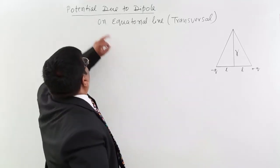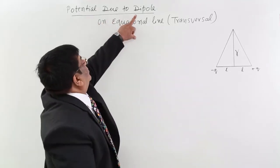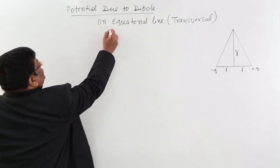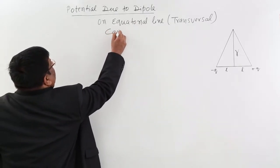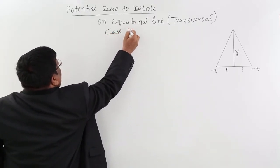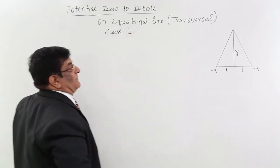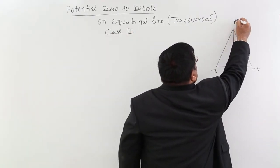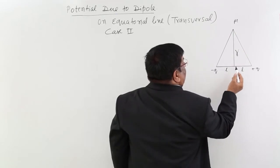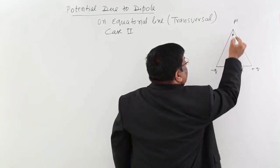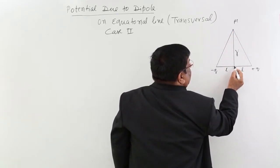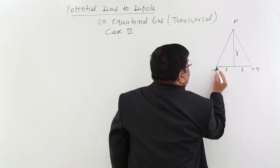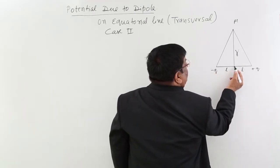We will now study potential due to a dipole. We will take Case 2: our point is on the equatorial line. Here is our point — let us say its name is M — and it is on the equatorial line. The equatorial line is perpendicular to the dipole from its center, with charges minus Q and plus Q.